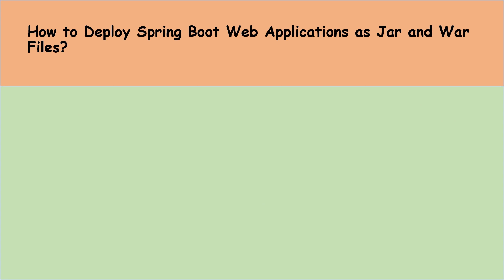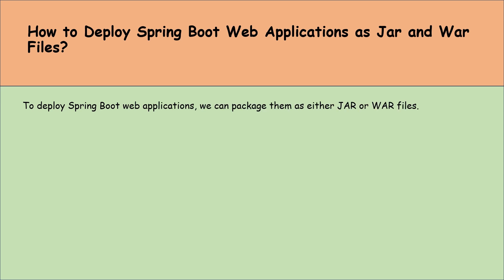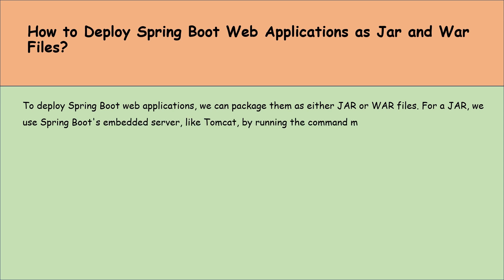How to deploy Spring Boot web applications as JAR and WAR files? To deploy Spring Boot web applications, we can package them as either JAR or WAR files. For a JAR file, we use Spring Boot's embedded server like Tomcat by running the command mvn package and then the java -jar command.